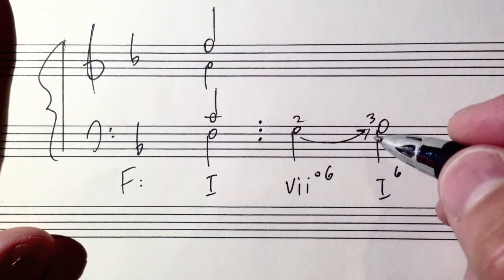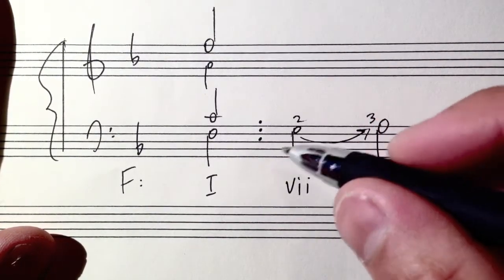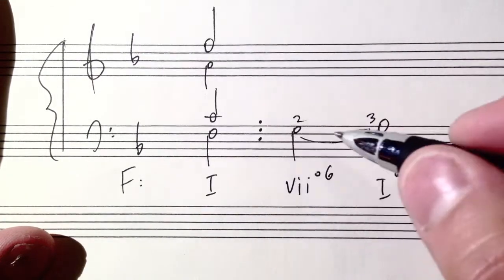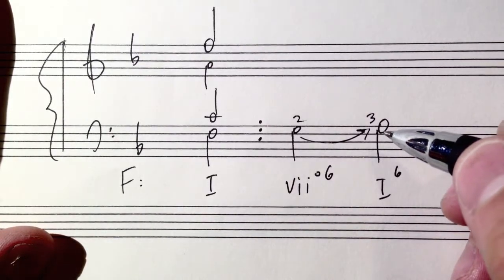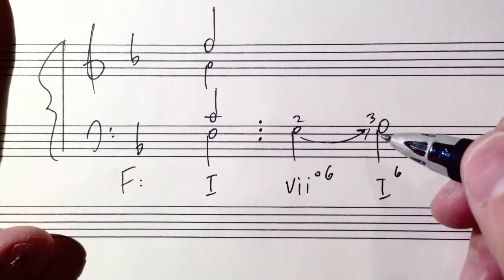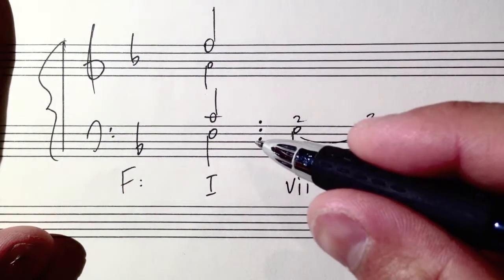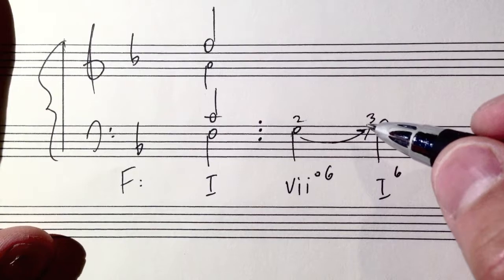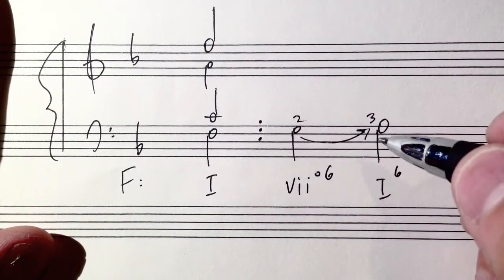Sometimes you'll find two moving descending back down to one though. So you can have a one chord, a seven six chord, and descend back down to a one. So you'll have that G natural as an upper neighbor to the F natural.